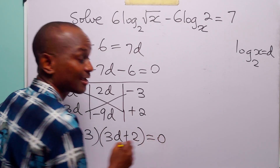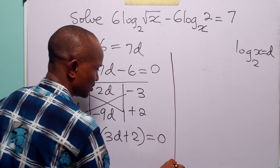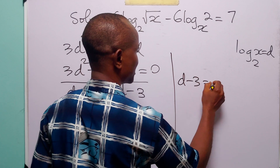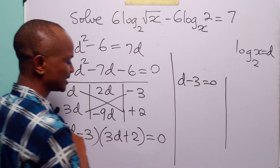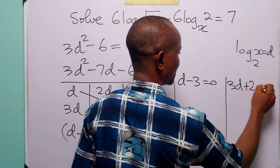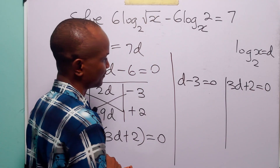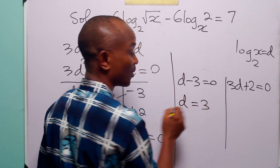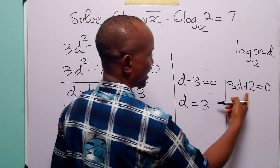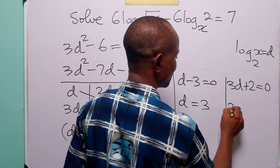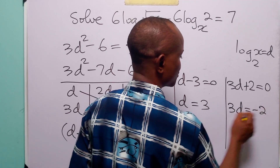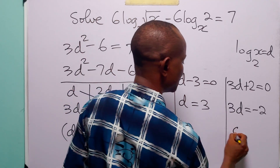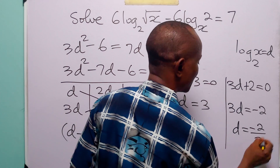And this is equal to 0. This means that either d minus 3 equals 0 or 3d plus 2 equals 0. From the first, adding 3 to both sides, we have d equals 3. From the second, subtracting 2 from both sides, we have 3d equals minus 2, so d equals minus 2 over 3.